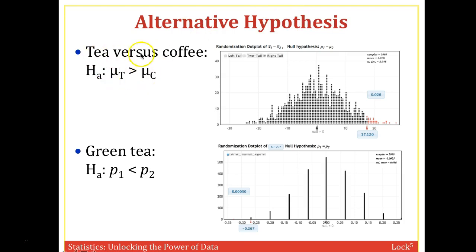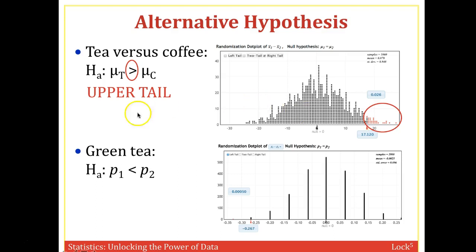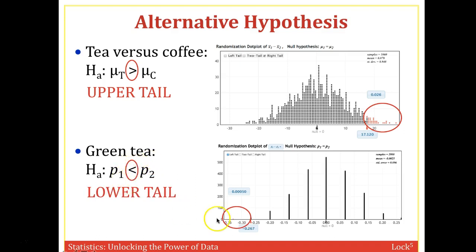Looking at the alternative hypothesis: for tea versus coffee, the alternative was that tea is greater than coffee, so this is a greater-than, upper-tail test. The p-value covers only the values in the right tail. For the green tea example, the proportion of green tea drinkers who developed cancer was less than those in the placebo group, so we have a less-than alternative and we look at a lower tail. A greater-than alternative means a right/upper tail; a less-than alternative means a lower/left tail.